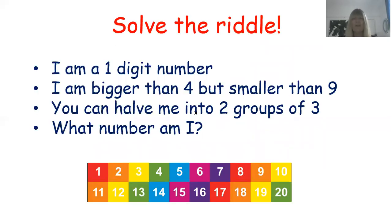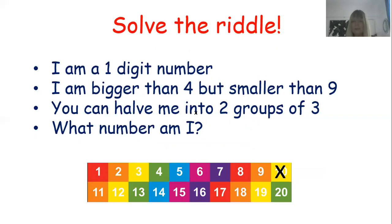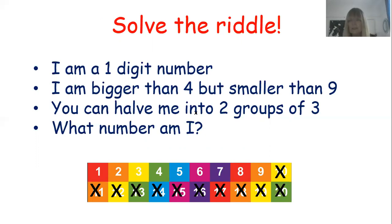Now, finally, we're on 'solve the riddle' — this is a new one. You are going to work out what number I have been thinking about. It says: I am a one-digit number. As you can see at the bottom, we've got two rows from one to twenty. Can you see where the two-digit numbers are? Ten is a two-digit number, so it can't be ten, eleven, twelve, thirteen, fourteen, fifteen, sixteen, seventeen, eighteen, nineteen, or twenty. So now we're down to numbers that are only one digit.